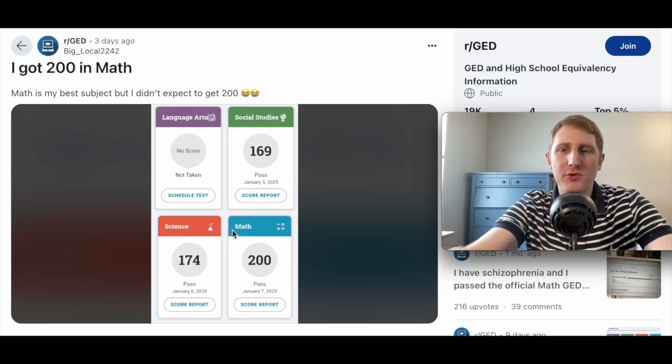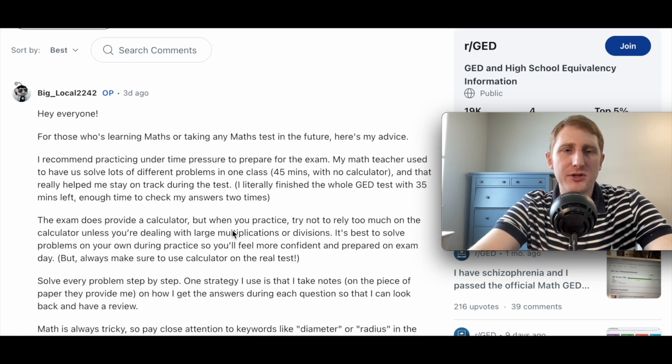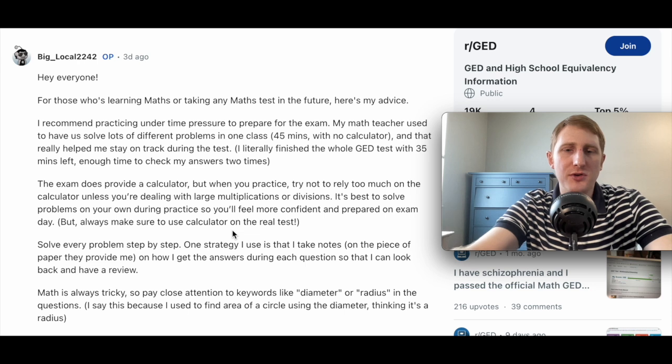I actually just saw a post on Reddit from a test taker who got an incredible score, a perfect score on math. The test taker said to pay close attention to keywords like diameter or radius in the questions. So I recommend just knowing if you're given the diameter, how to convert that to the radius. And if they give you the radius, how to convert that to the diameter and vice versa.